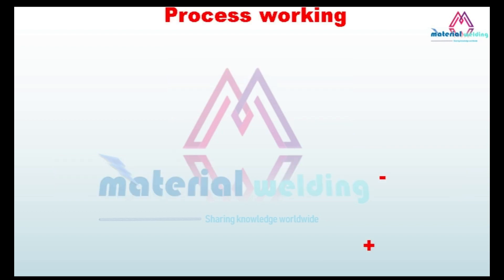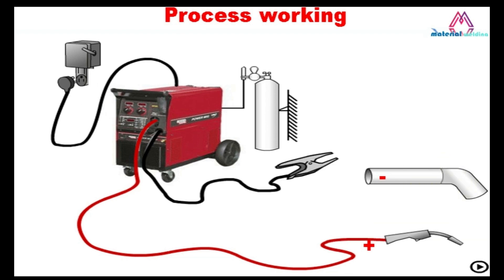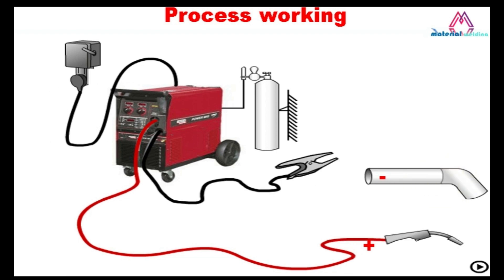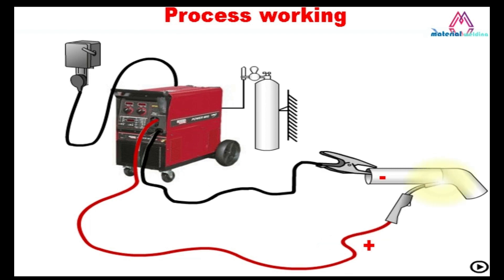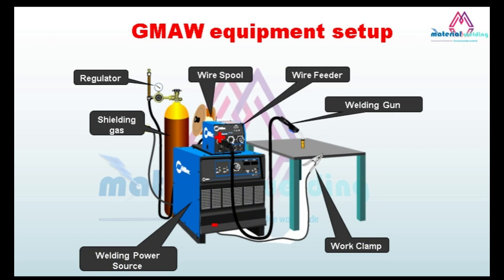The working of gas metal arc welding is shown in an animation, where direct current electrode positive polarity is in use. The wire feeder is built into the machine. The main parts of the equipment setup are the welding power source, wire feeder, gas cylinder, welding gun, wire spool, and work clamp — all necessary for the process to function as intended.